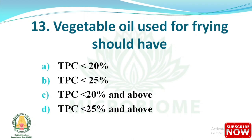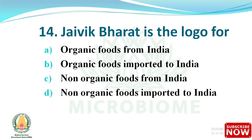Next question: vegetable oil used for frying should have — options: (A) total polar compounds less than 25%, (B) total polar compounds less than 25% and above [for reused oil], (C) same as B, (D) same as B. The right answer is option B — total polar compounds less than 25%.